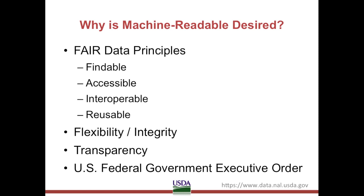For entities like governments, who have a mission to be more transparent to their citizens, more accessible data is key. For those creating and submitting data on behalf of the U.S. government, in 2013 an executive order was passed to make open and machine-readable the default for government information. So moving forward, if your data and other files can be formatted in a machine-readable way, this is required.